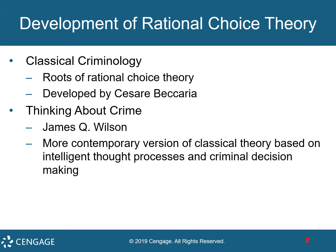The roots of rational choice theory lie in classical criminology, developed by Cesare Beccaria. He said that criminals are rational beings who plan crimes, and criminals are deterred solely by fear of punishment. This was influential for more than 100 years, but positivist criminology took over by the end of the 19th century.